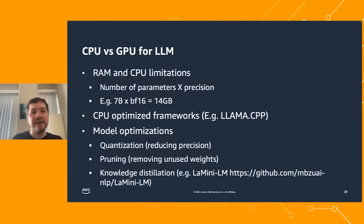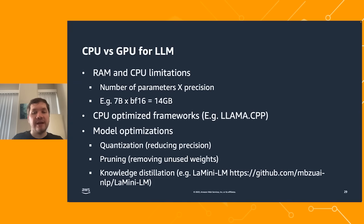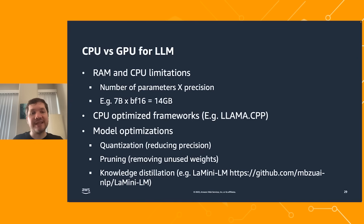The next part covers using CPU for large language models. Large language models require a large amount of memory — for example, seven billion parameters with half-precision floating point is 14 gigabytes, which is a lot. But Fargate can support up to 100 gigabytes. Sometimes you have CPU-optimized frameworks, for example llama.cpp. To make a model work successfully on CPU, you may need to apply additional optimizations.